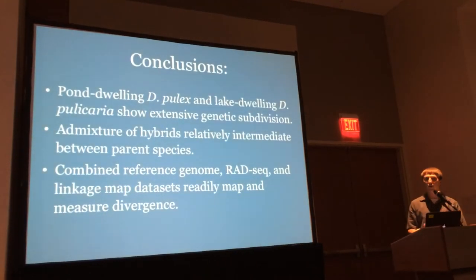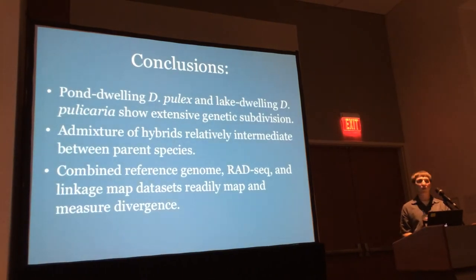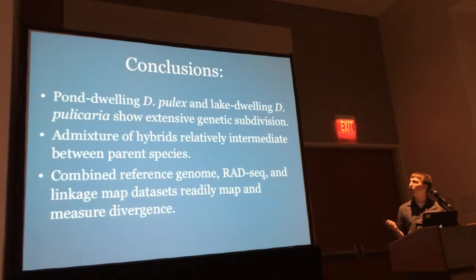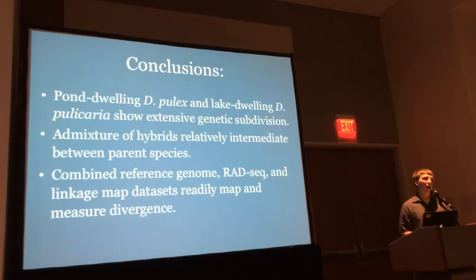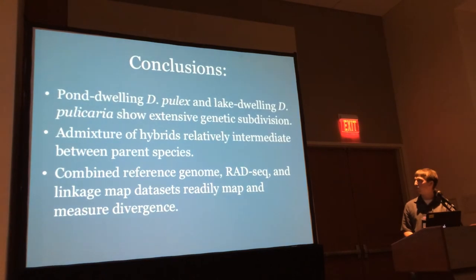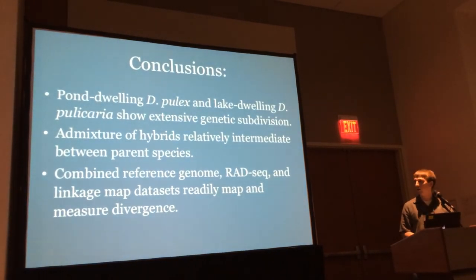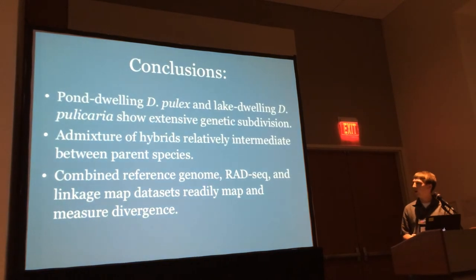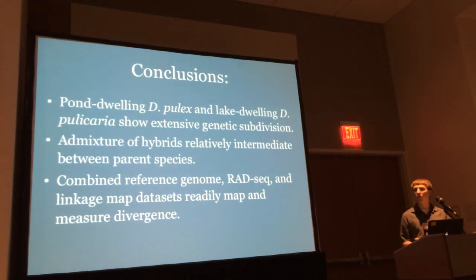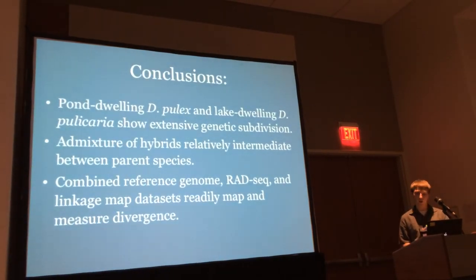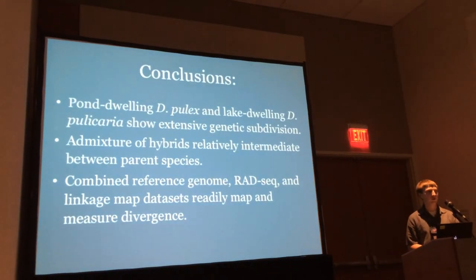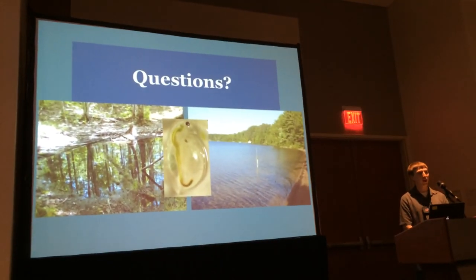To wrap this up in three easy pieces: first, we found strong evidence for genetic subdivision between the pond-dwelling ecotype Daphnia pulex and the lake-dwelling Daphnia pulicaria. Second, the putative hybrids we found are somewhat intermediate between the two parent ecotype species. Third, methodologically, combining reference genomes, RAD-seq, and linkage map datasets, we are readily able to map and measure genomic divergence. Thank you all for your time, and I'd be happy to field your questions.